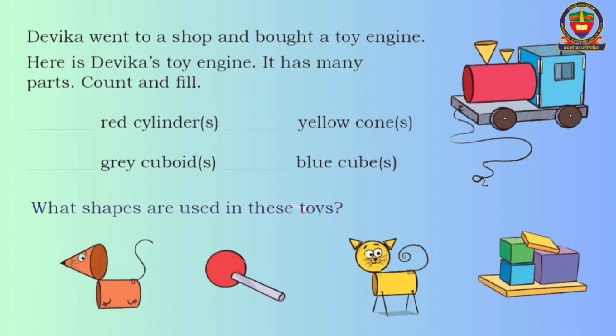Devika went to a shop and bought a toy engine. Here is Devika's toy engine — it has many parts. Count and fill: red cylinders — one; yellow cones — two; grey cuboid — one; blue cube — one.